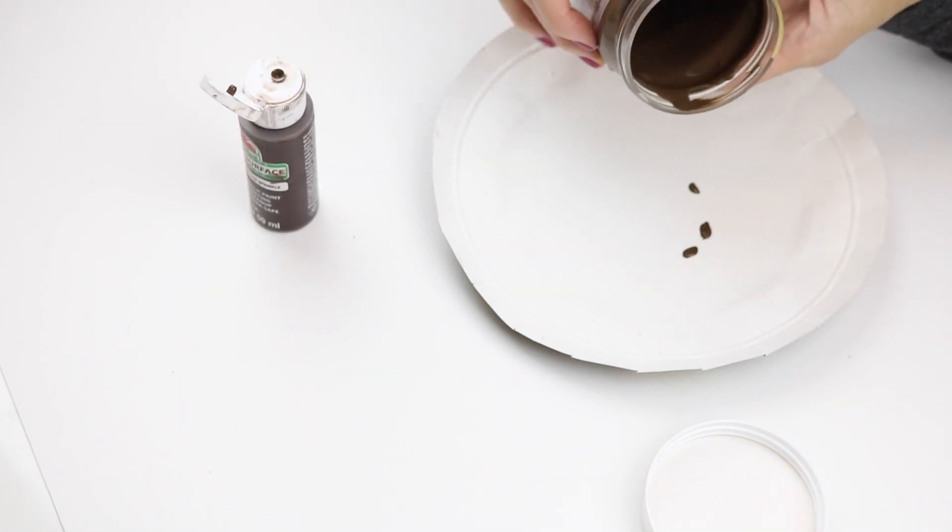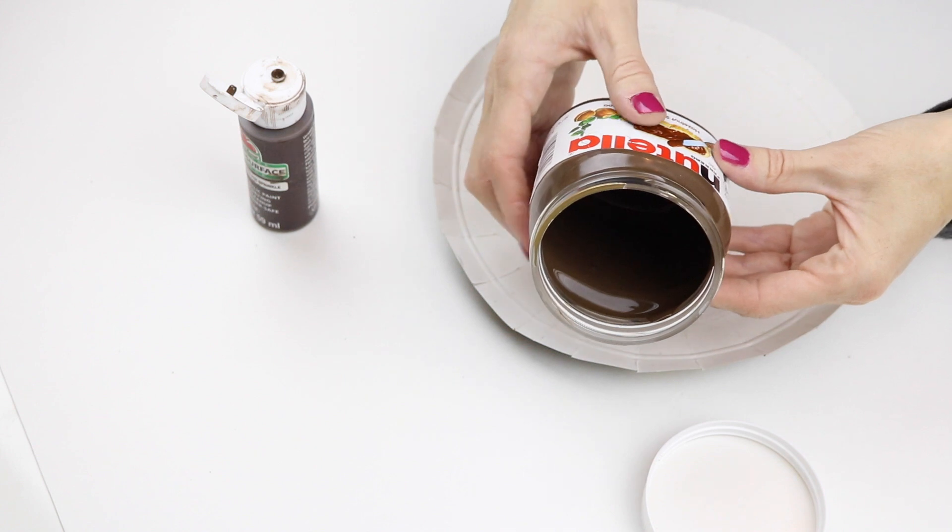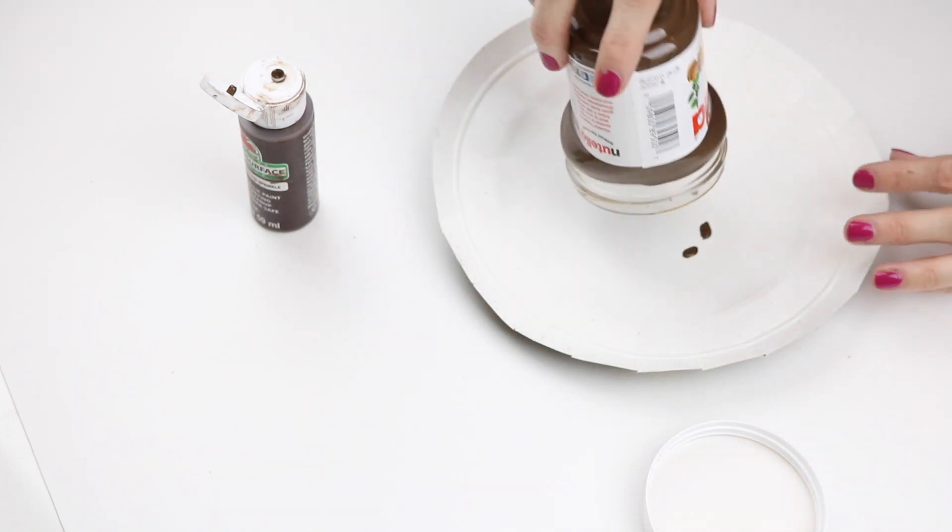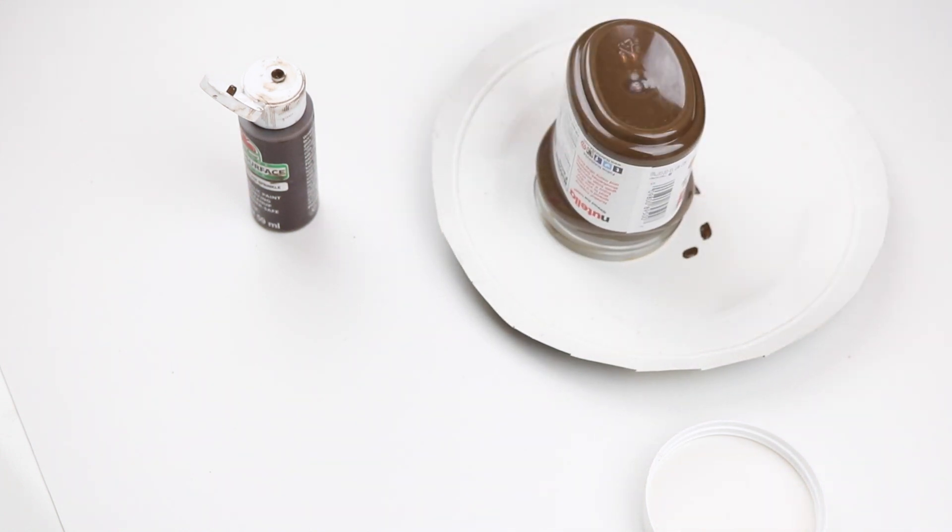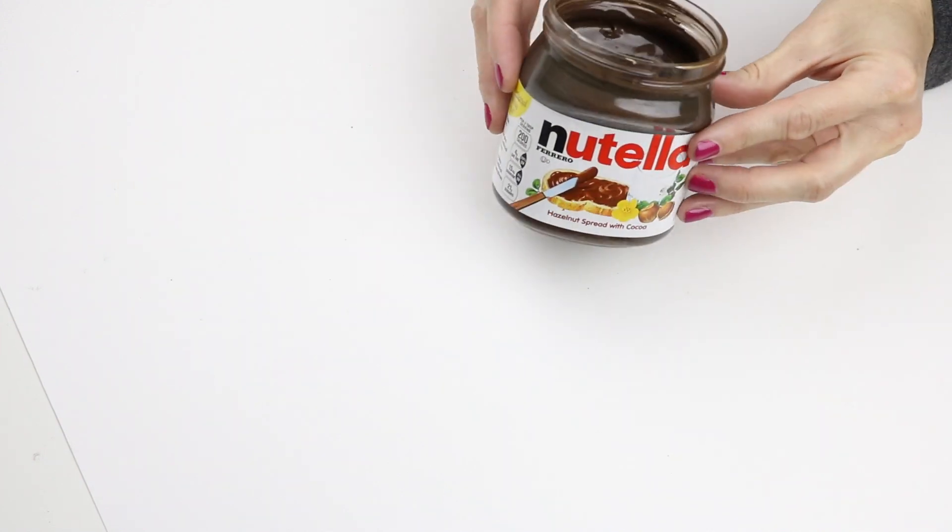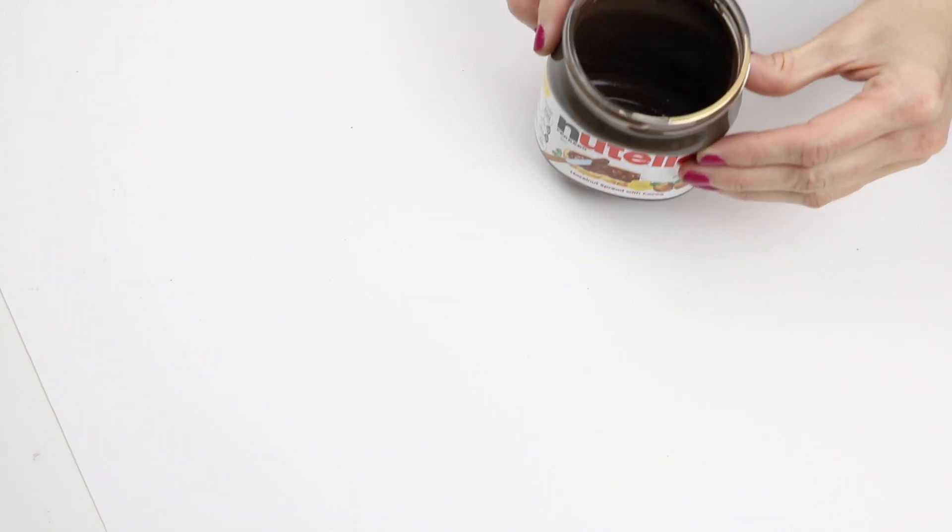When the entire container is coated just turn that upside down and then let it dry. Here is what my container looked like after it was dried.